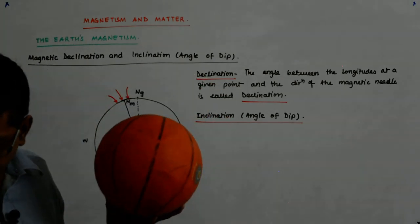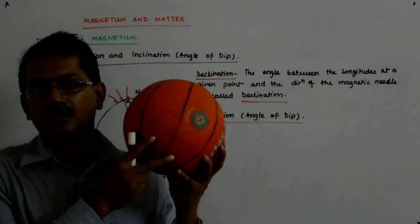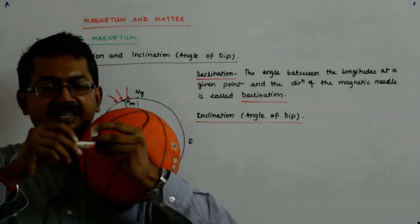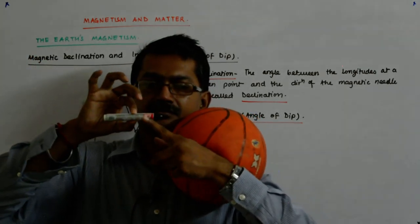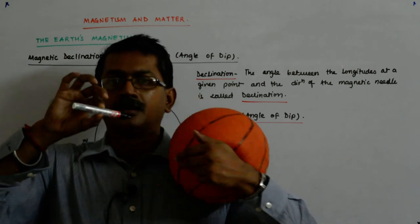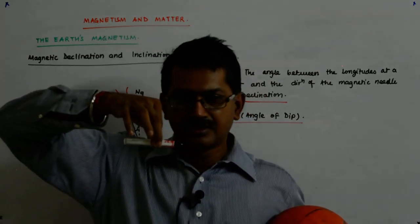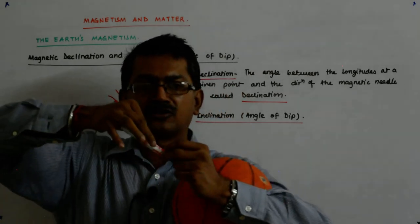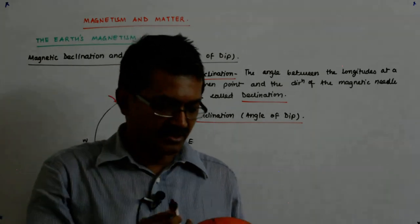The magnetic compass you have normally seen has a needle like this, hinged here, and the needle moves like this — it is forced to move horizontally. But if I hinge it the other way, what happens? It will be able to move up and down as well. Now let us try to understand what happens with this modified compass.